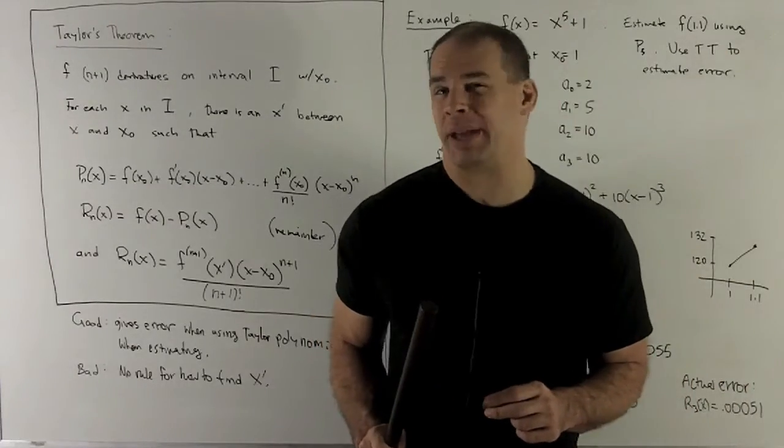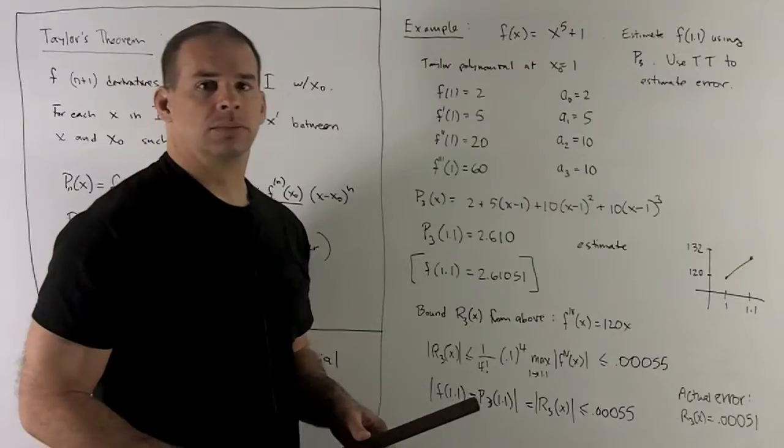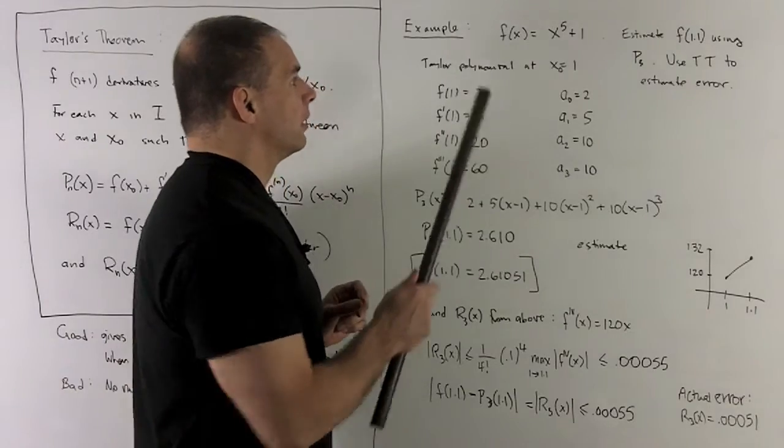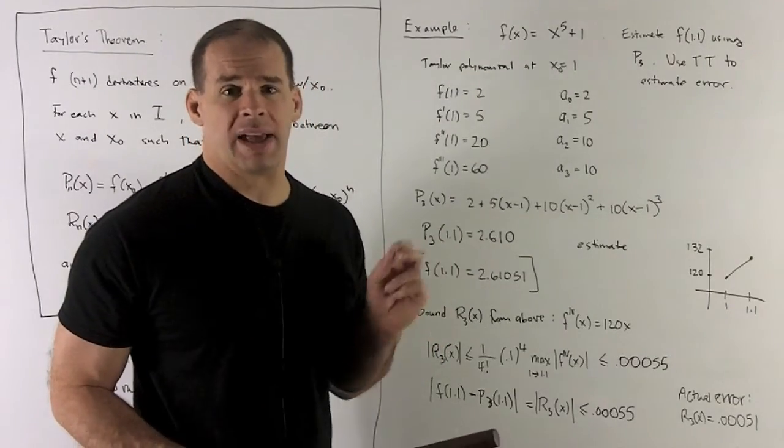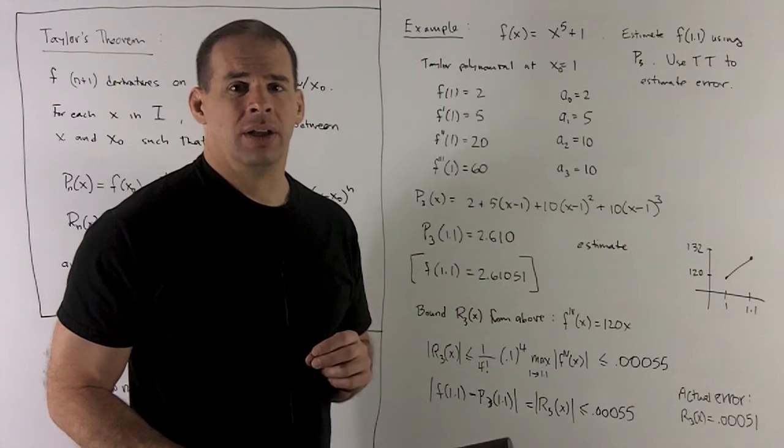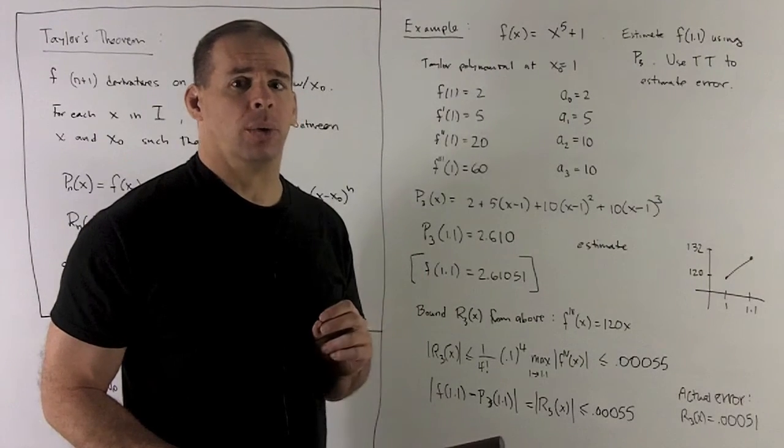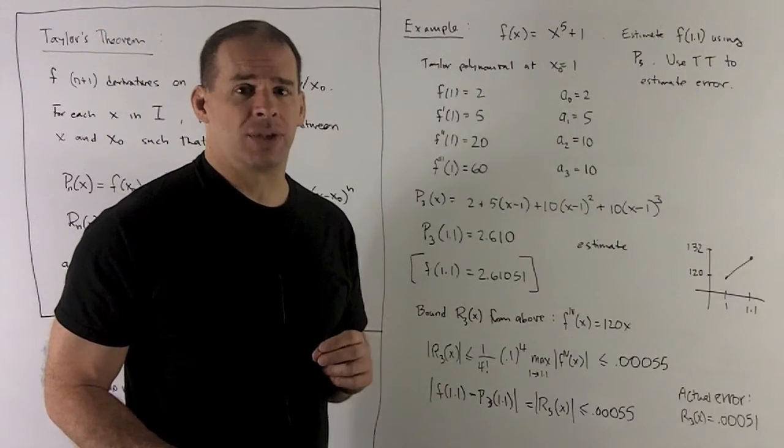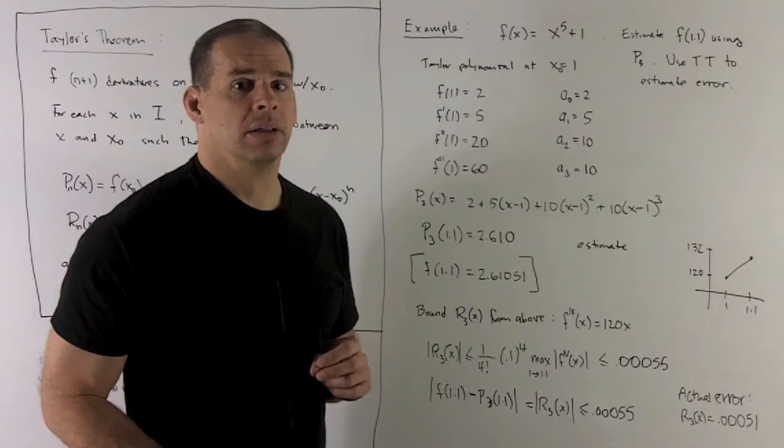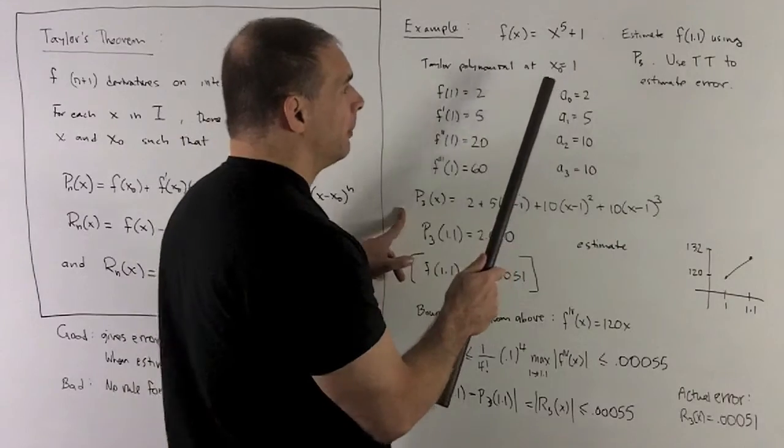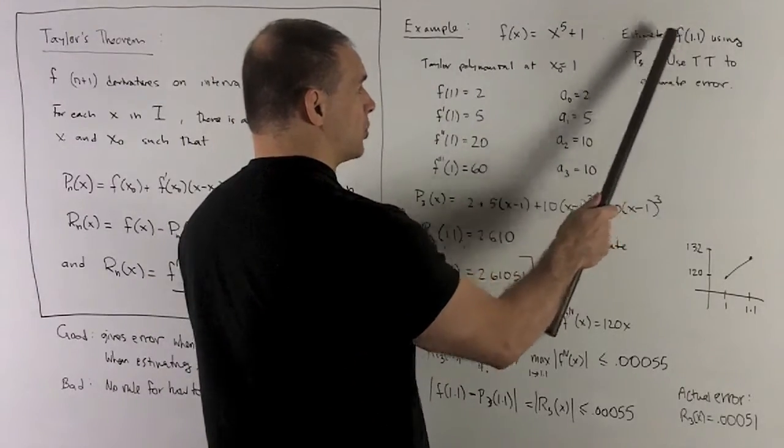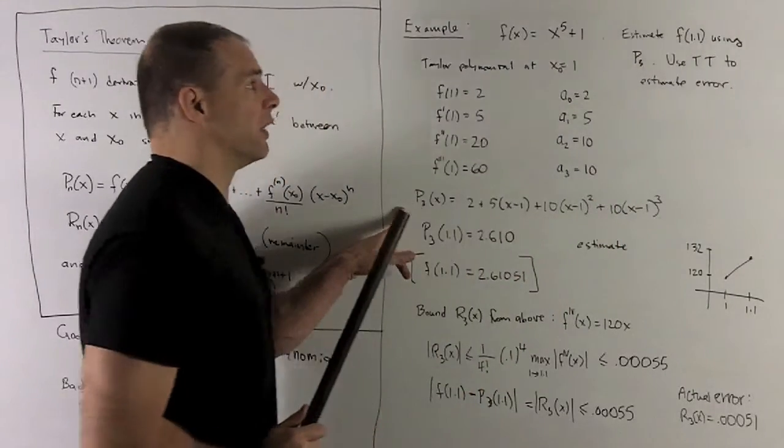Let's take a look at an example just to make this more concrete. Our function is going to be f(x) = x⁵ + 1. The problem is, we want to estimate f at 1.1 using the third Taylor polynomial. Then, I want to use Taylor's theorem to estimate the error. I want to center my polynomial at 1 because 1 is going to be the closest point to 1.1 that's going to be nice for our function.